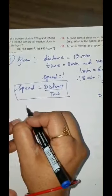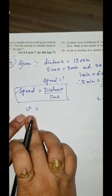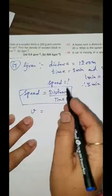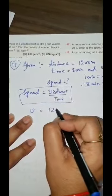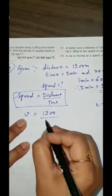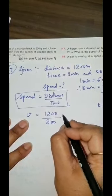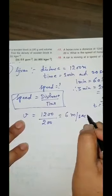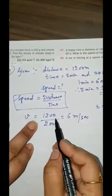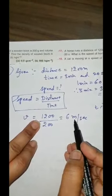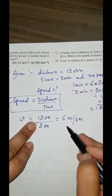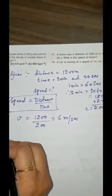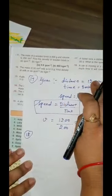Now put the value. Speed symbol is V, is equal to distance — value of distance is 1200 — upon time 200. So it will come 6 meter per second. Please see the unit — why I have written meter? Distance is given in meter and time is given in second. Now coming to numerical 18.